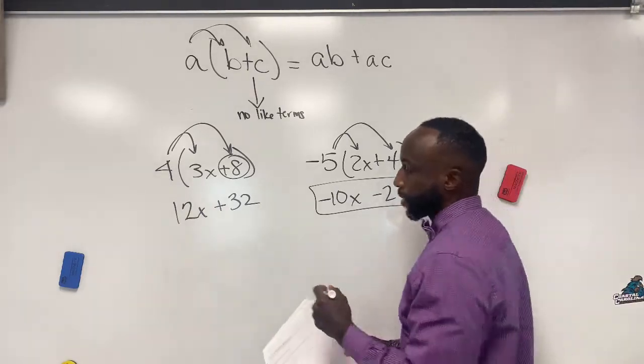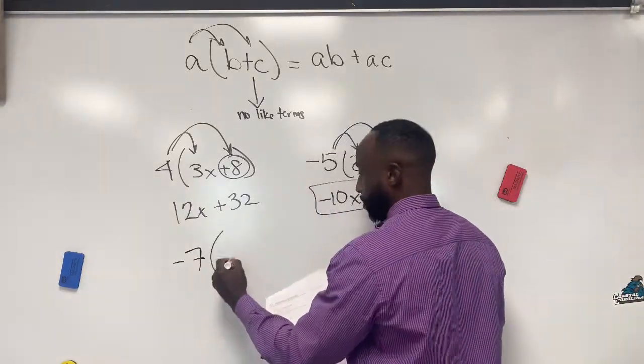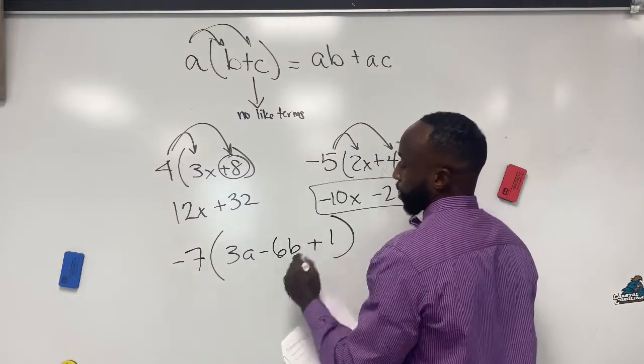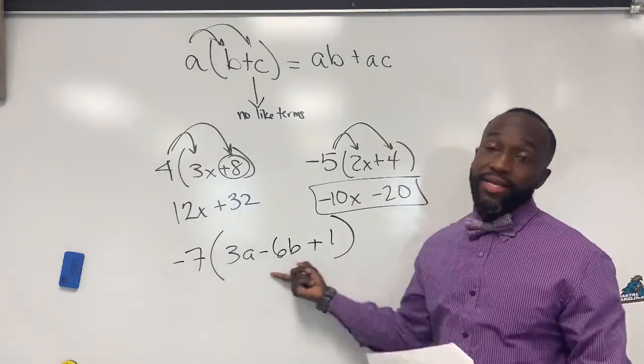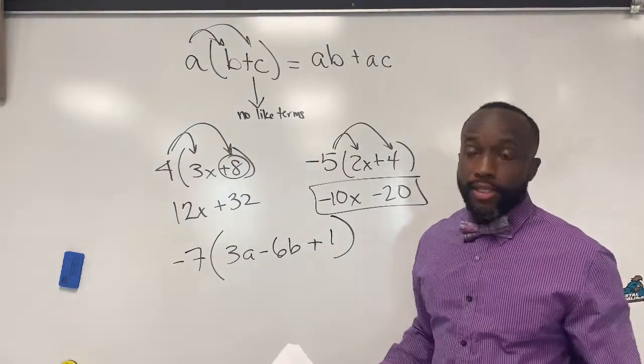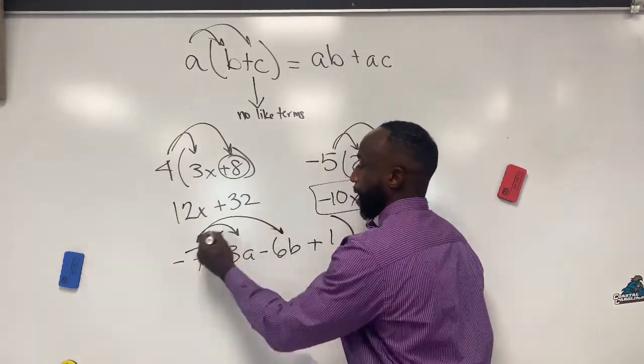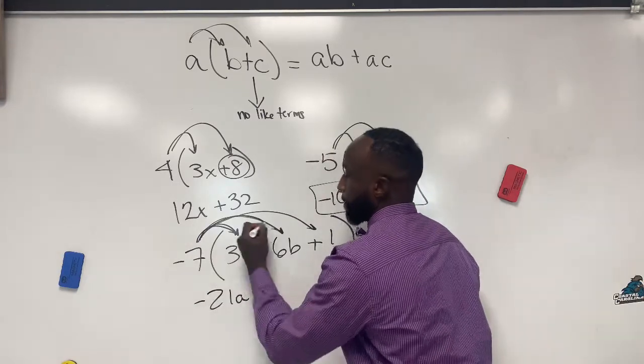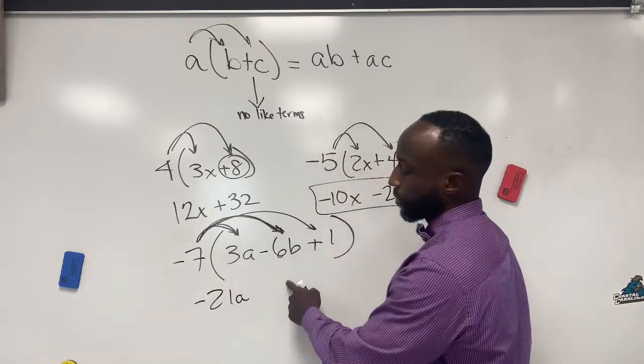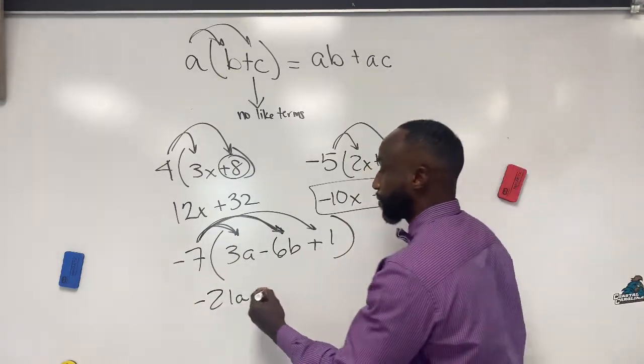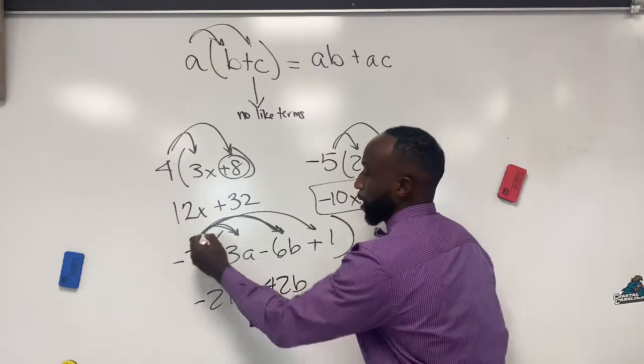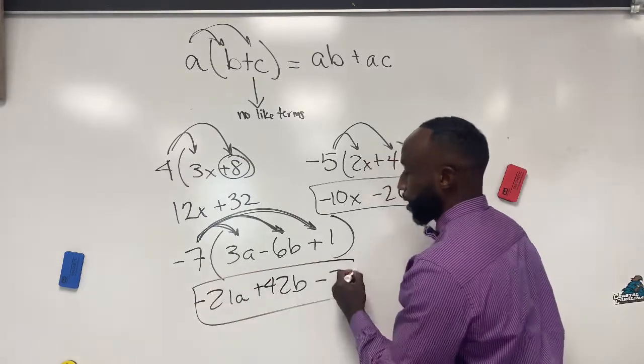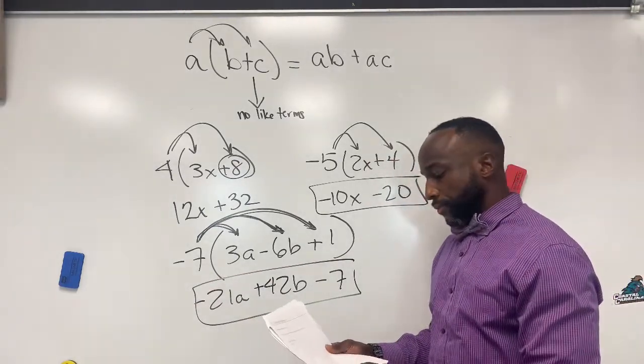Let's look at a three-term situation in parentheses. Negative seven times the quantity of three a minus six b plus one. We got three terms here. They can't be simplified inside of these parentheses, so the next thing we'll do is multiply. Seven times three, negative twenty-one a. Negative seven times negative six—a negative times a negative gives us a positive number—so it's going to be plus forty-two b, and then the last one is negative seven times one, which gives negative seven. Again, no like terms. This is our solution here.